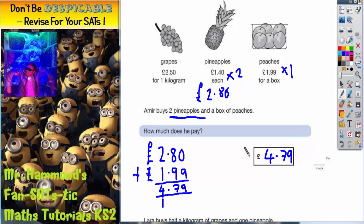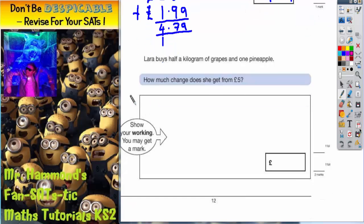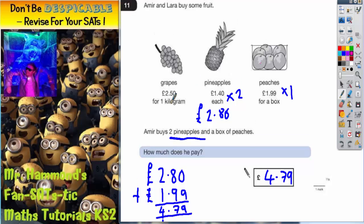Let's get a different colour for part 2. Now it says Laura buys half a kilogram of grapes, half a kilogram of grapes and one pineapple. How much change does she get from £5? Well let's deal with a half a kilogram of grapes first. If you go back to your price list. A full kilogram is £2.50. So half a kilogram is going to be half of that. And half of £2.50.